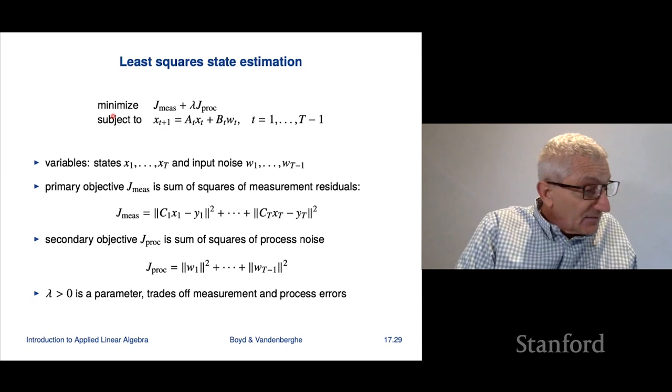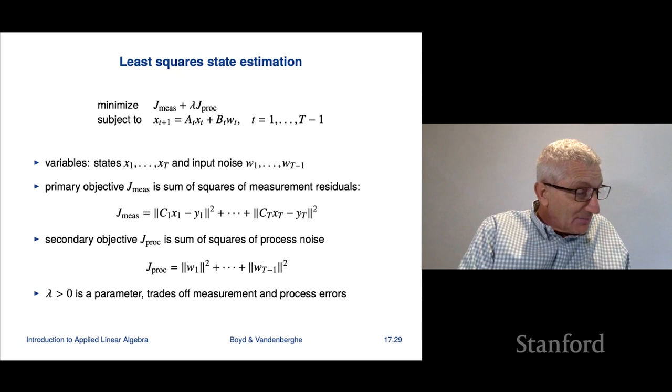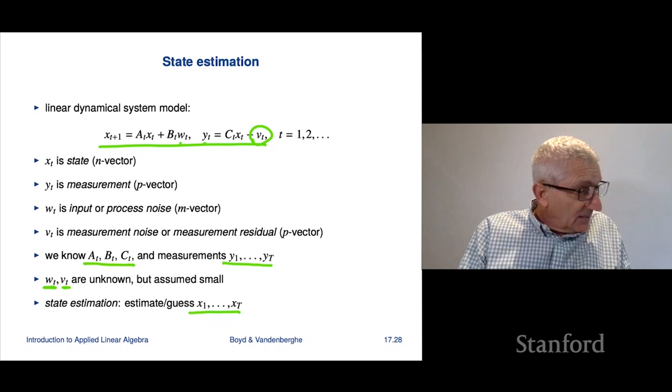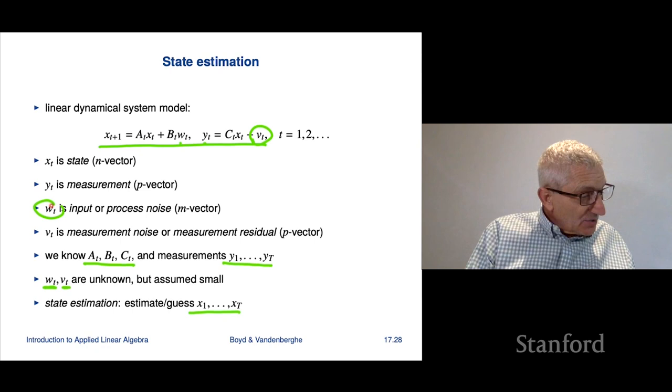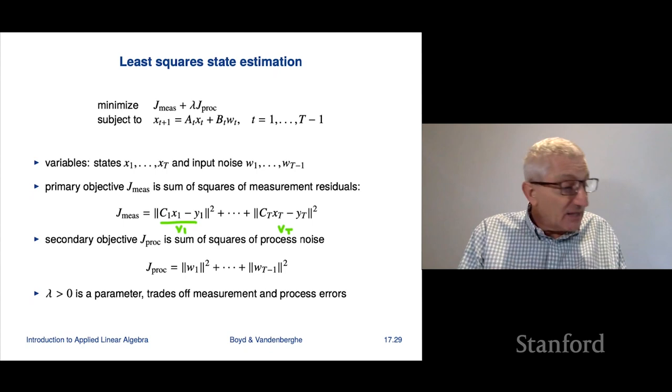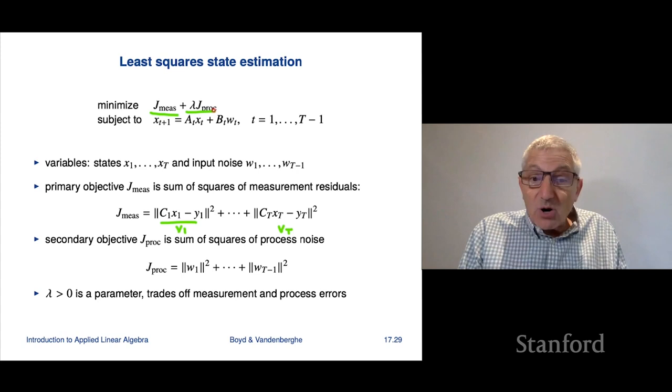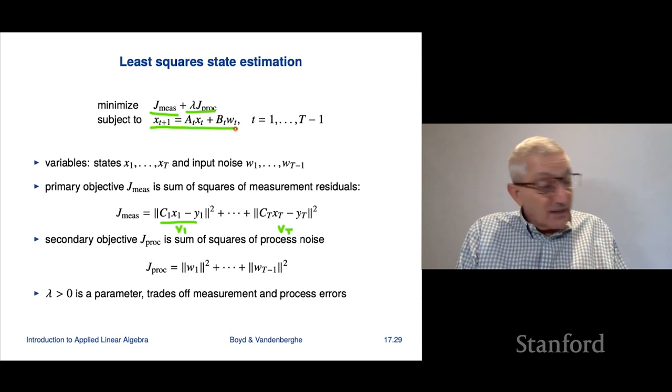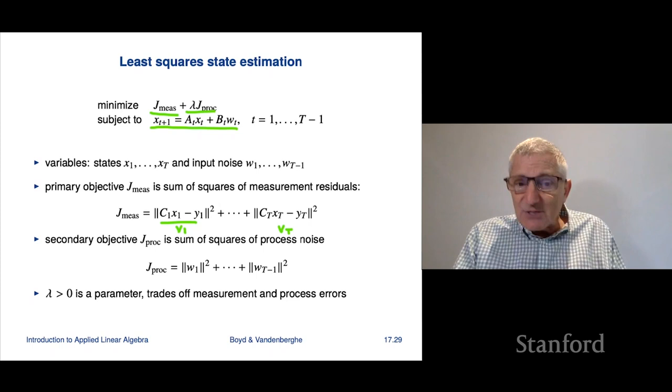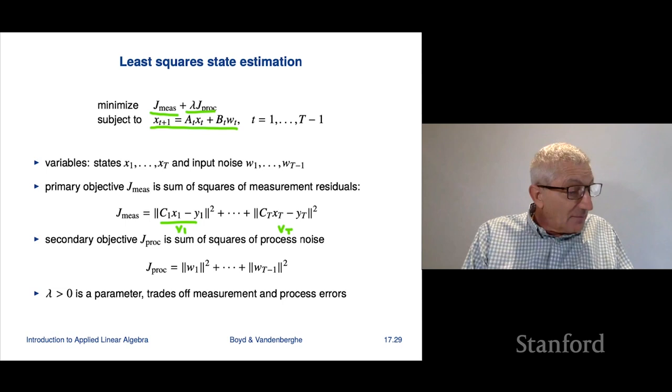So here's how we're going to formulate it. We're going to say we're going to minimize, again, there are two objectives. And basically what it comes down to is very simple. We can either come up with a state sequence where we make the Ws small or we can make the Vs small. And that's actually these are the two objectives. And of course, we're going to scalarize it with a positive parameter in between them to trade off.